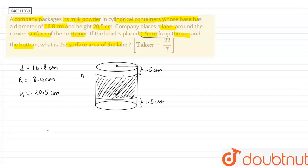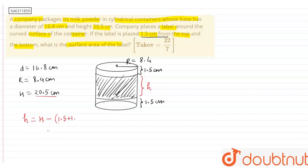The radius is 8.4 cm. Since the total height was 20.5 cm and the height of the label — let us call it small h — small h will be the height of the container, that is 20.5 minus (1.5 plus 1.5). So this will become 20.5 minus 3, which gives us 17.5 cm. This is the height of the label.